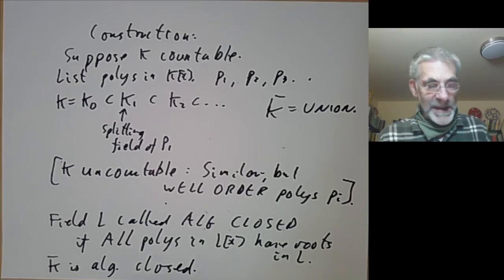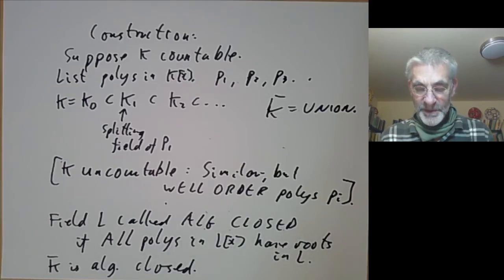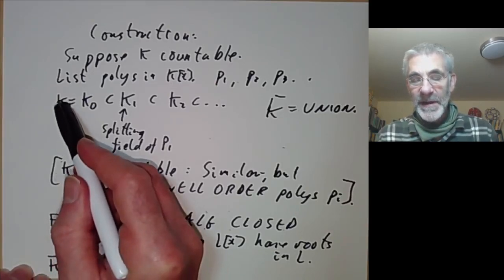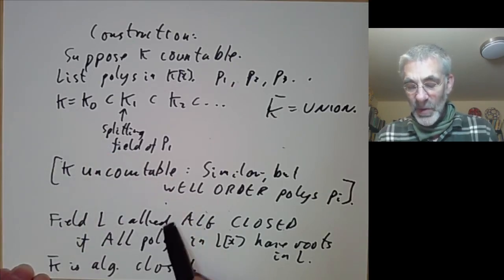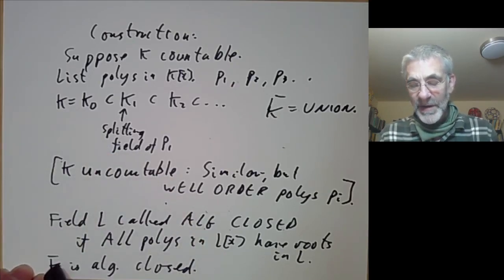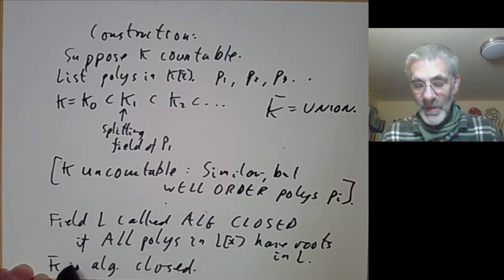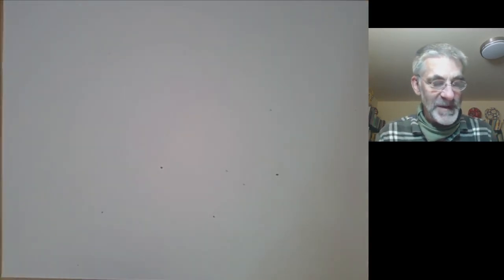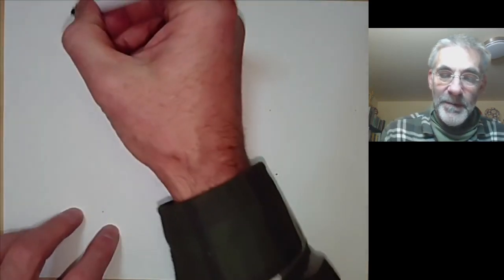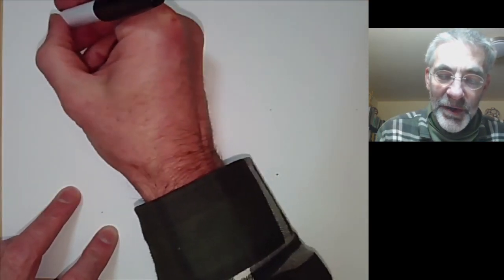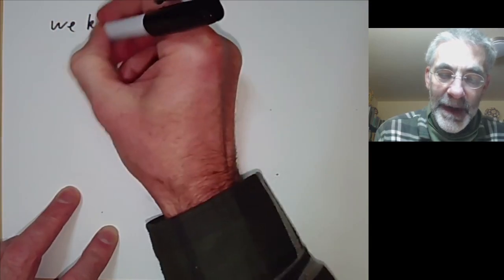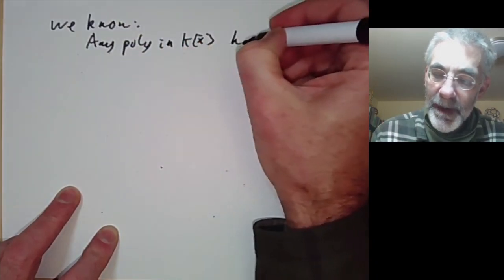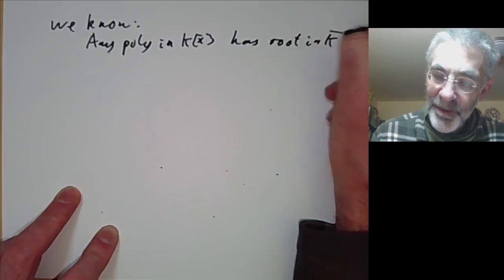Wait — I seem to be getting away with something, because all I've proved is that any polynomial with coefficients in k has a root in k̄. But in order to claim that k̄ is algebraically closed I need to show that a polynomial with coefficients in k̄ also has a root. So what we have shown is that any polynomial in k[x] has a root in k̄ by construction.